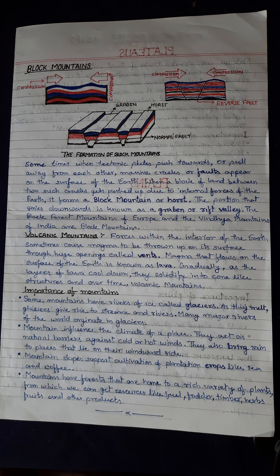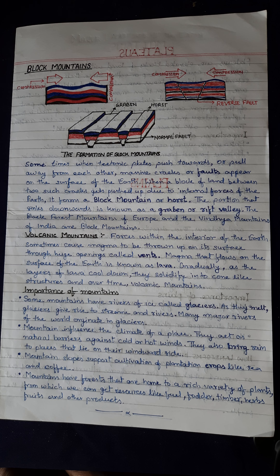Mountains also bring rain to places that lie on their windward side. Mountain slopes support cultivation of plantation crops like tea and coffee. Mountains have forests that are home to a rich variety of plants, from which we can get resources like fuel, food, timber, herbs, fruit, and other products.